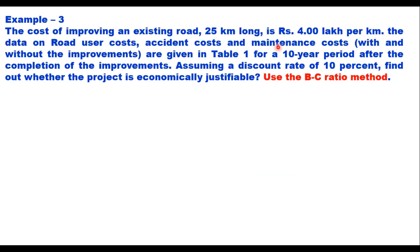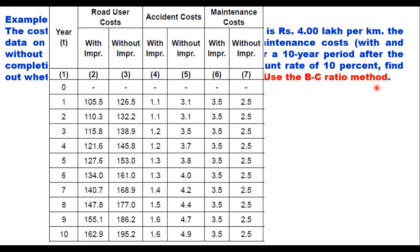Now to explain this benefit cost ratio method, let me take the same example which we took earlier in case of NPV. That the cost of improving an existing road 25 kilometer long is Rs 4 lakh per kilometer. The data on road user cost, accident cost, maintenance cost are given in the table for a period of 10 years. And assuming a discount rate of 10%, find whether the project is economically justifiable. Use BC method now, rather than NPV.